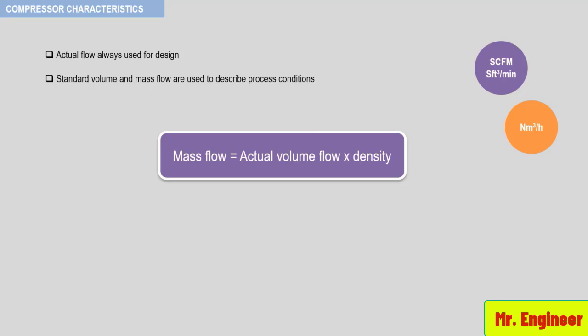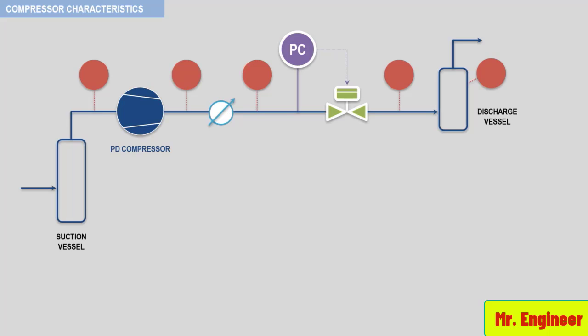Now, to demonstrate the characteristics of a positive displacement compressor, let's observe this simplified process scheme including a positive displacement compressor. The red circles that you can see here represent pressure gauges. For this example, let's consider the following set of initial pressures. The suction of the compressor is set at 20 psi. The pressure downstream the valve is at 110 psi. The pressure of the discharge vessel is at 100 psi and the pressure upstream of the valve is set at 135 psi. And finally, the discharge pressure of the compressor is at 140 psi.